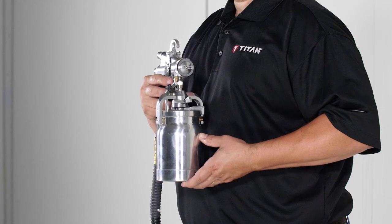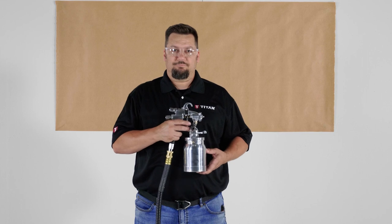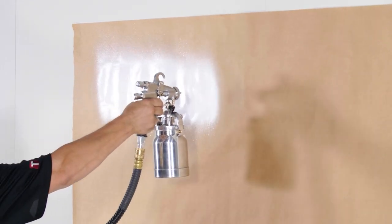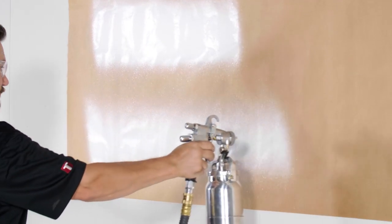With your settings all at their starting point and paint in the cup, it's time to spray a test pattern. The speed of gun movement affects the amount of paint on the wall. Moving it slowly will spray more paint on a surface while a faster motion will spray less.